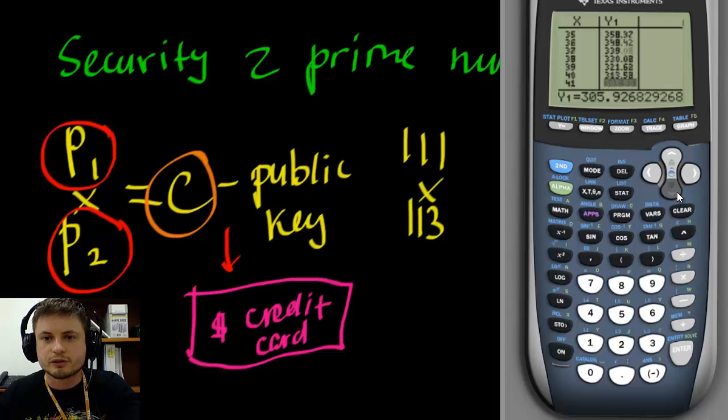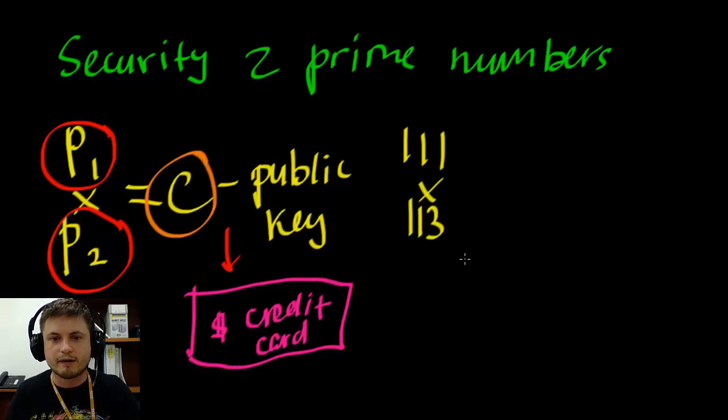Now this is just for a three digit number. Now imagine a prime number that has like a million digits and you cross multiply them and you'll get so many many many factors. In other words, if you wanted to find the original private keys, if you wanted to hack these keys and find p1 and p2, it would take you like years and years and years even on the most powerful computer. And by then these p1 and p2 keys could already be changed. In other words, using prime numbers in security is absolutely essential.